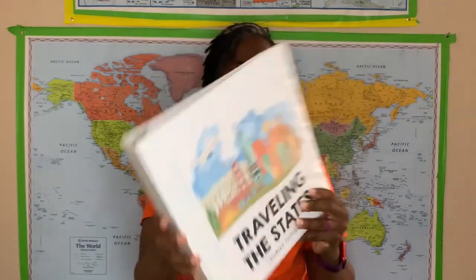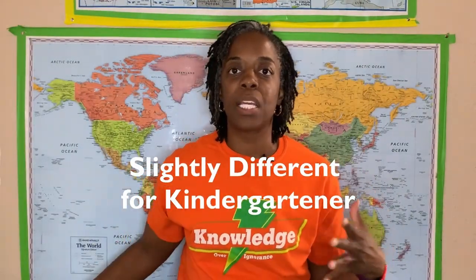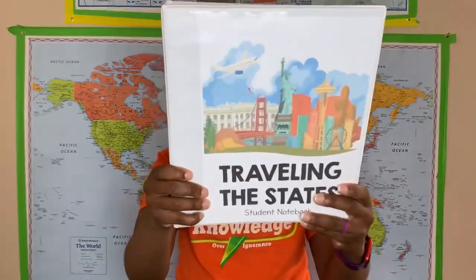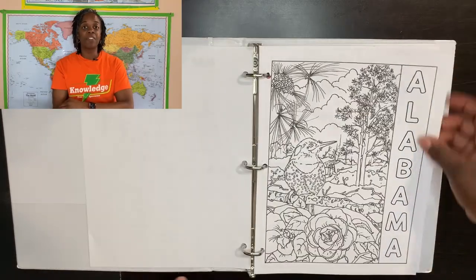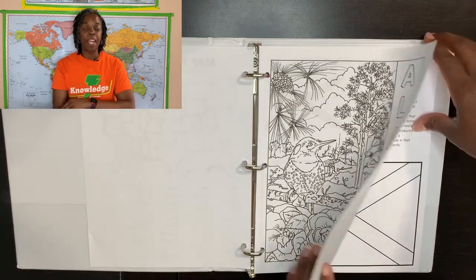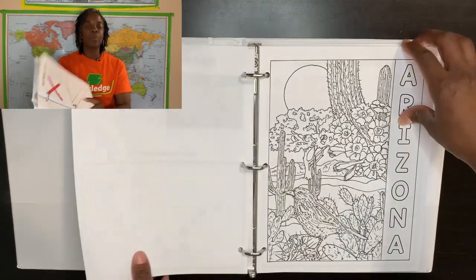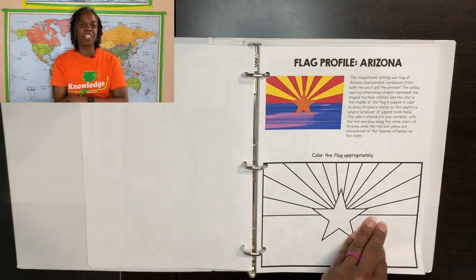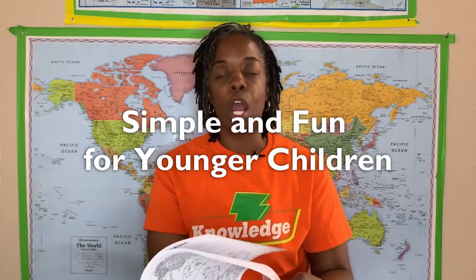Each of my older daughters has a binder like this. For my kindergartner, since there are a lot of things she won't be able to do, I simply printed off the front maps-you-travel coloring page, the coloring page that comes with each state, and the flag page. Those will be the only things she does for each state, giving her an opportunity to color while my older daughters are reading and working on their nature profiles. She can follow the picture and create the flag on her own — it'll be really fun for her.